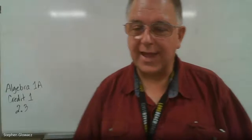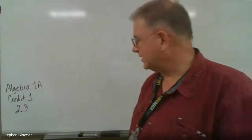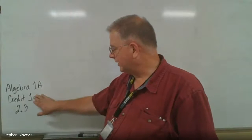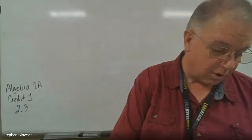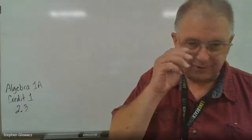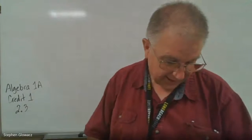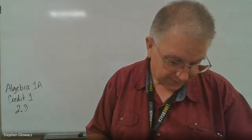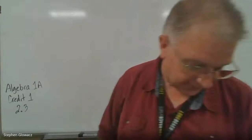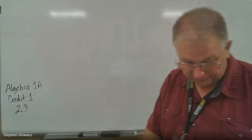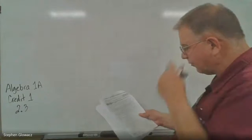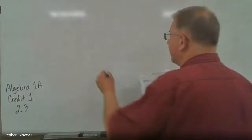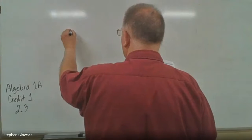Here we are at the last lesson of Algebra 1A Credit 1. It's lesson 2.3, and in lesson 2.3 we're going to be solving for a variable in a formula. It sounds a little more complicated than it is. Let's jump right into it — you'll see. We're going to be on page 42 to start, at the very bottom of the page, problem number one.